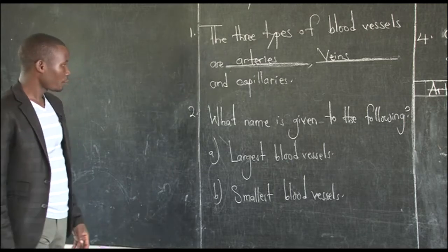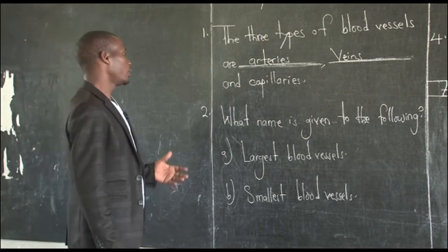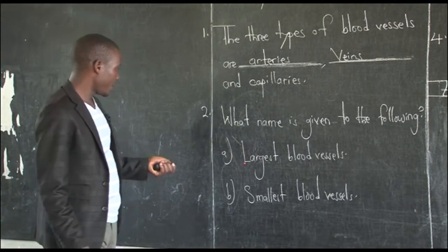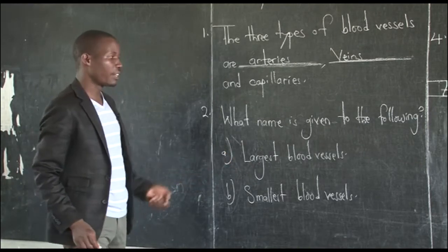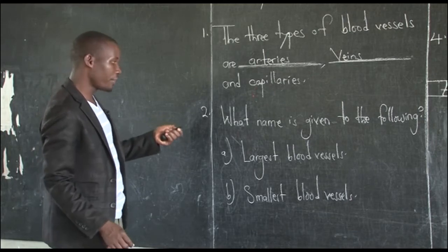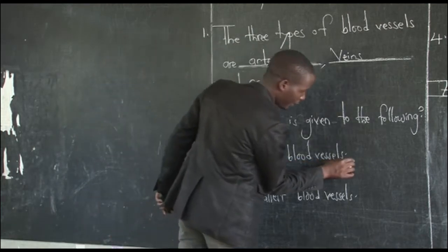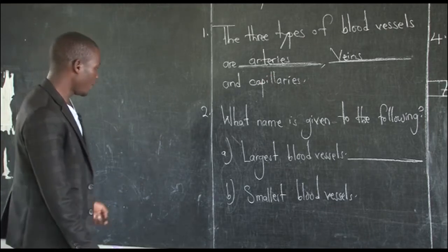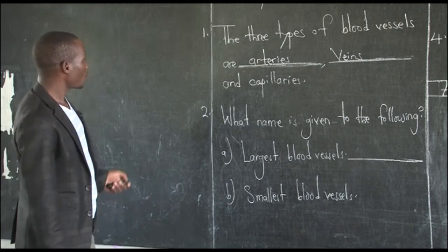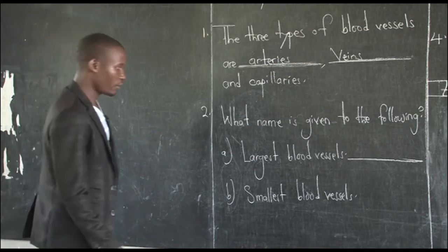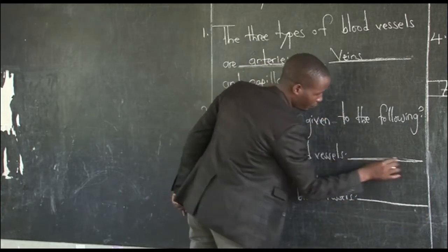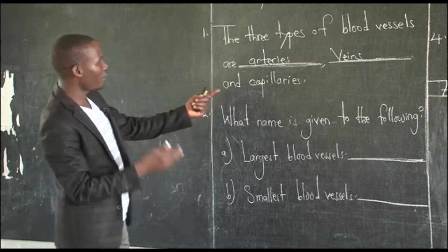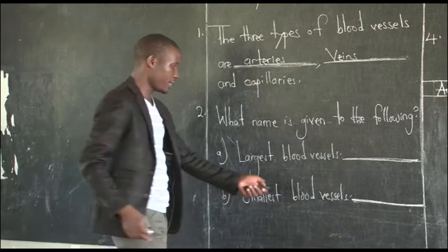Number two asks what name is given to: A, the largest blood vessel, and B, the smallest blood vessel. From our three blood vessels — arteries, veins, and capillaries — you need to choose which is the largest and which is the smallest. We said veins are medium blood vessels, so you can use that to narrow down your answer for largest and smallest.